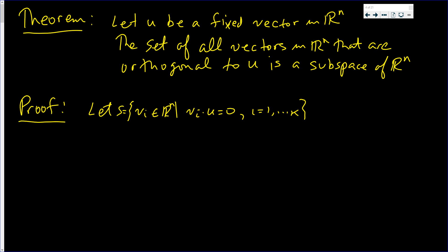All right, so we have to show that it's closed. Let Vi and Vj be in S. So U · Vi = 0 and U · Vj = 0. More importantly, U dot the sum is 0.